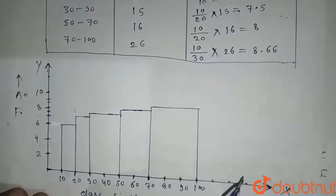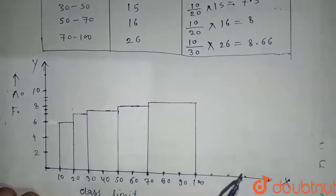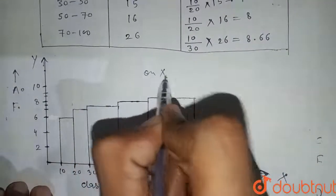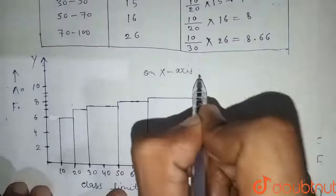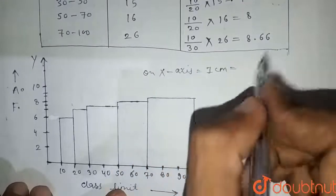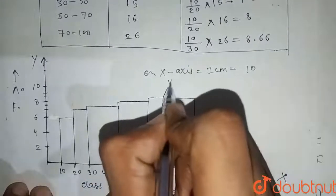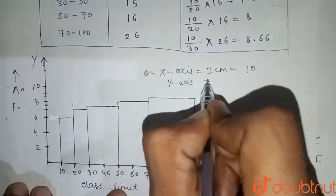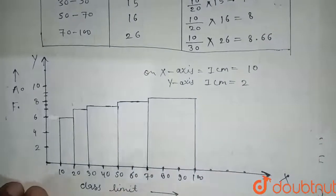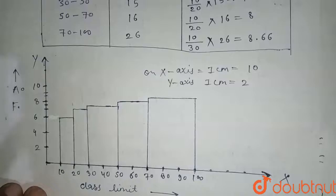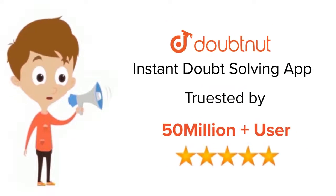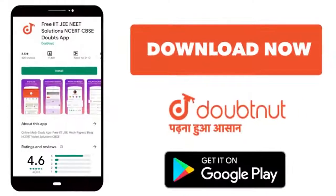This is the histogram for the given data. On the x-axis, one centimeter equals 10 units, and on the y-axis one centimeter equals 2 units. Thank you. Trusted by more than five crore students — download DoubtNet.